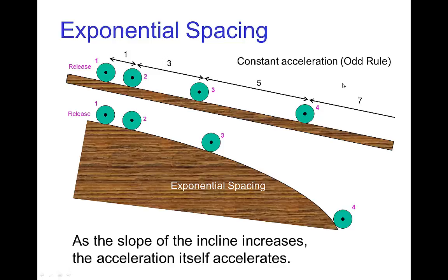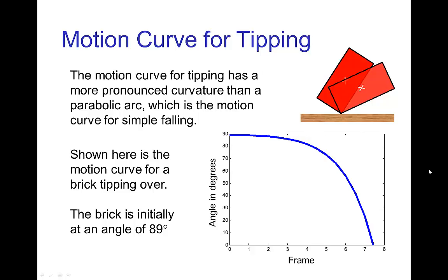When the spacings increase at this constant acceleration of the odd rule, we get a parabolic arc for the motion curve. When they increase at this faster rate, then we get something that is exponential spacing. If we look back at this motion curve and flip it upside down, it looks like an exponential that's shooting up.